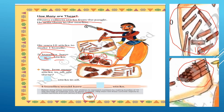Now, how many sticks in all are these? As you know, there are three bundles, and in three bundles there are 30 sticks. And here, there are one, two, three, four, five, six, seven, eight, nine — nine sticks. So, there are 39 sticks in all.